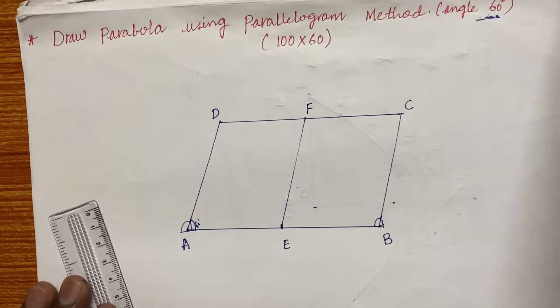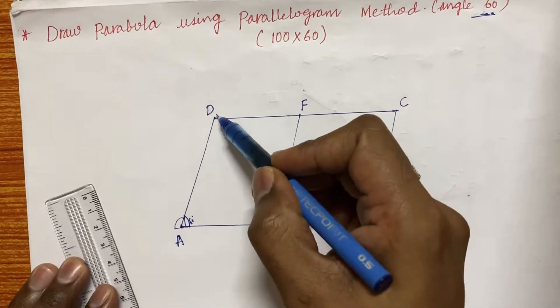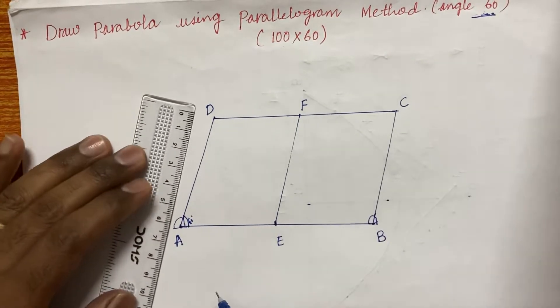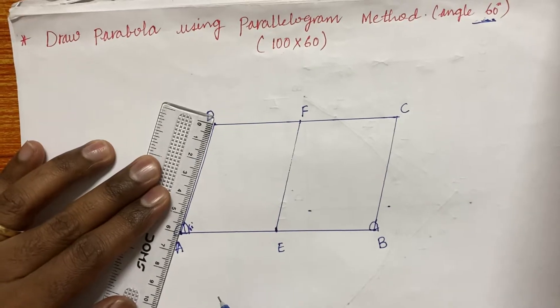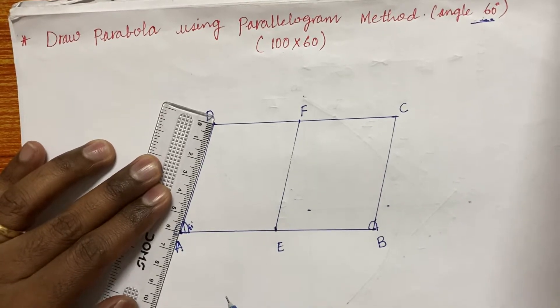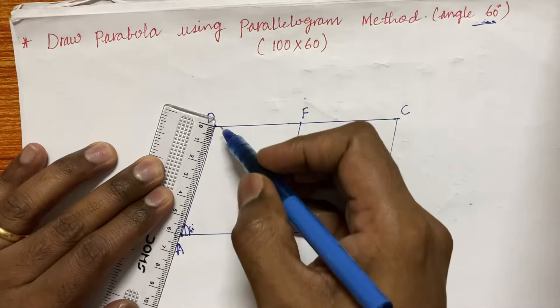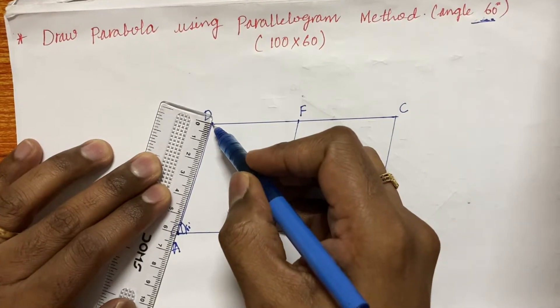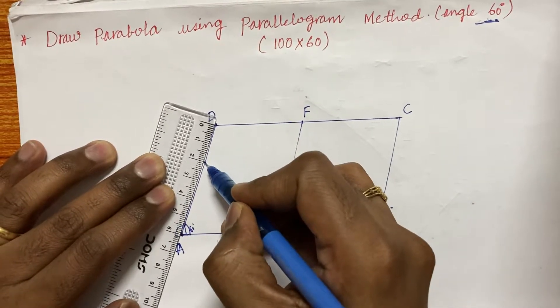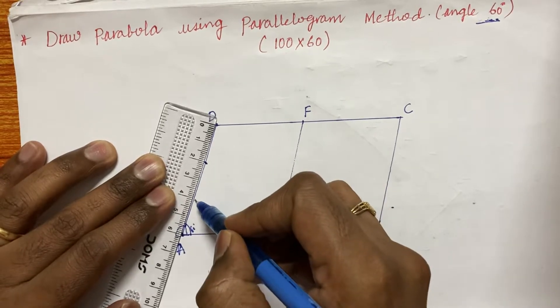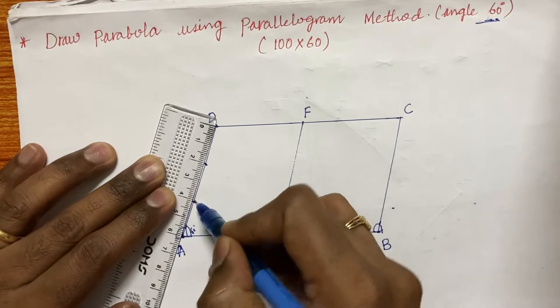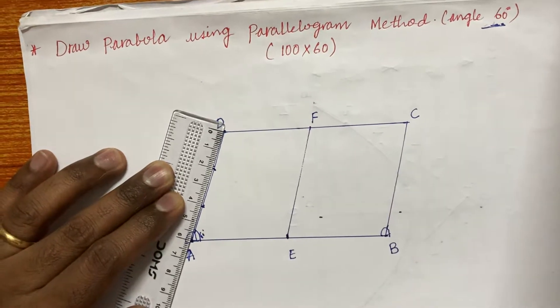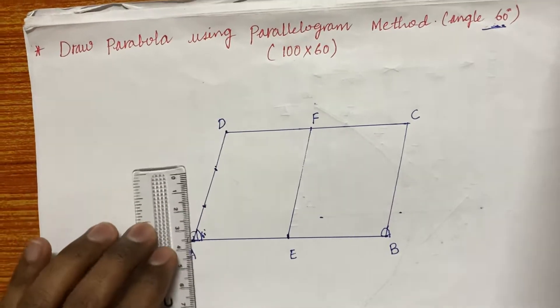So for this what you are supposed to do is divide this AD into any number of divisions. Let us say this is of how much? 100 and 60. I am going to divide it into three equal divisions. So I can make it with the scale. So this is 1, this is 2. I mean 1, 2, 3, 4. This is being divided into these many number of divisions.